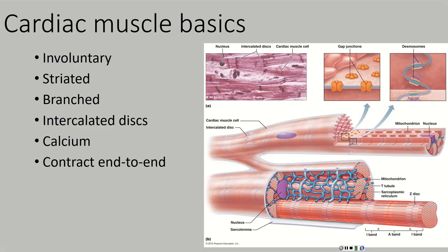That's really the end of the main point of this chapter — we've been talking about skeletal muscle. But there are other types of muscle. There is cardiac muscle, found only in the heart, and there is smooth muscle, found in several hollow organs throughout the body like blood vessels or the digestive tract.